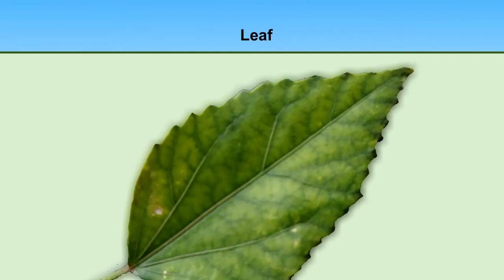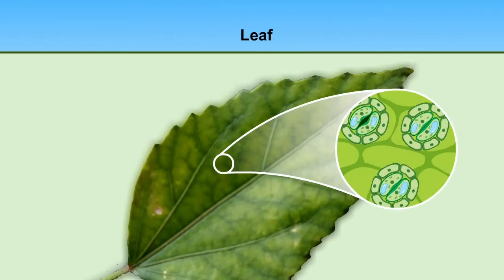We can see small pores on the surface of the leaves through a microscope. These tiny pores are called stomata.